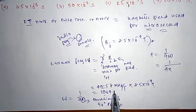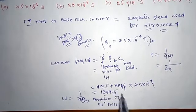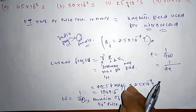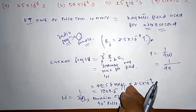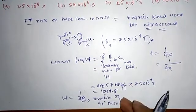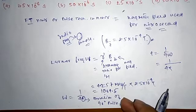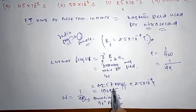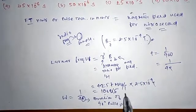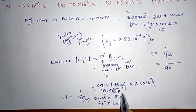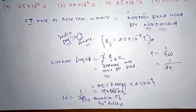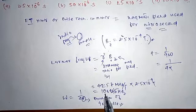Let me check whether it is correct or not. It's 42.57 MHz per Tesla times 2.5 × 10^-4 Tesla. This value is about 10.6 kilohertz.